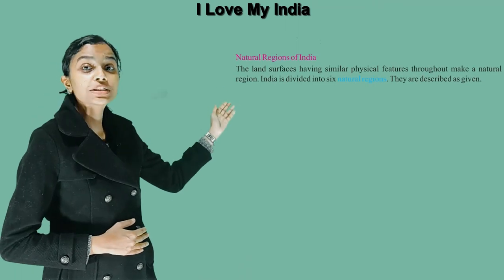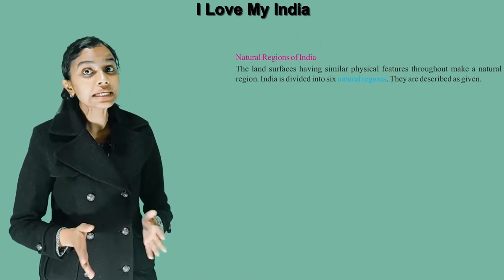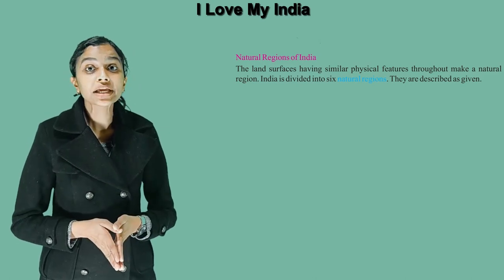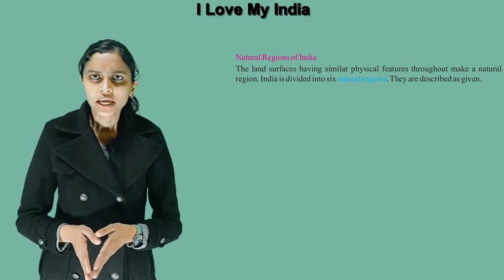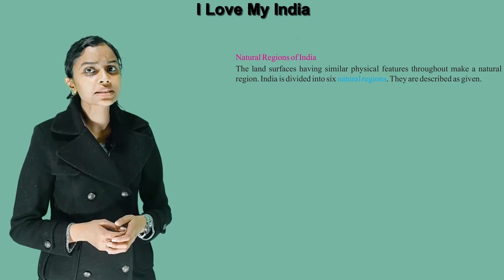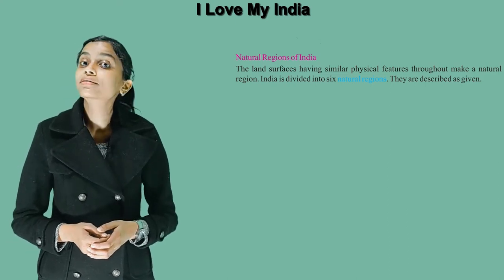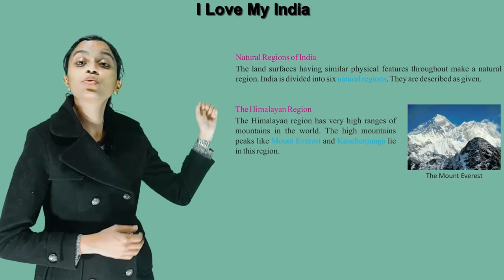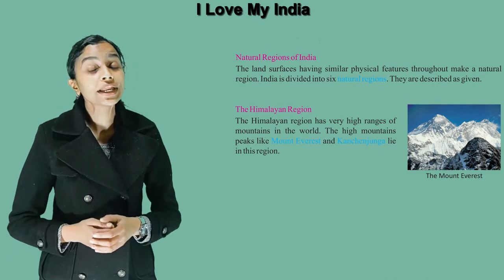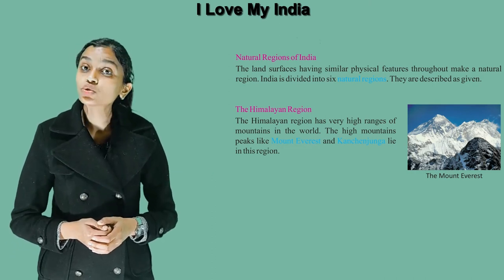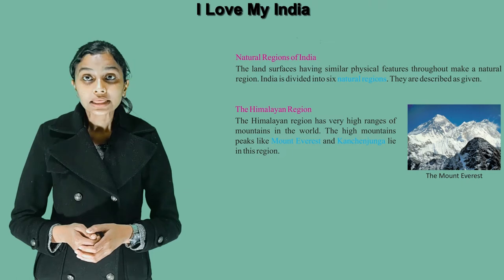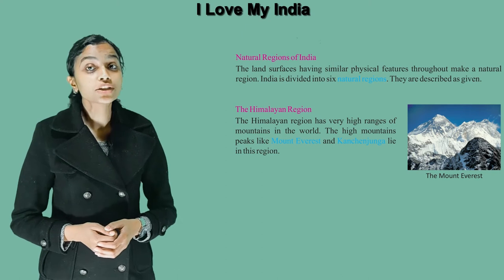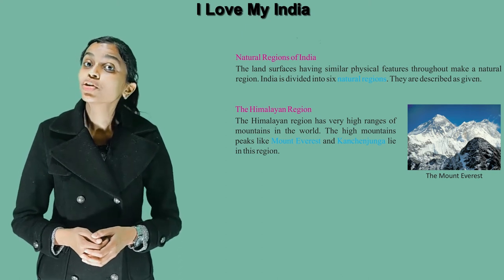Natural regions of India: the land surfaces having similar physical features throughout make a natural region. India is divided into 6 natural regions. The first one is the Himalayan region. The Himalayan region has very high ranges of mountains in the world. High mountain peaks like Mount Everest and Kanchenjunga lie in this region.